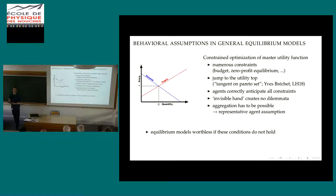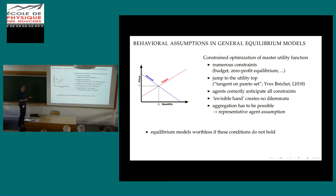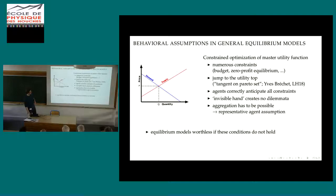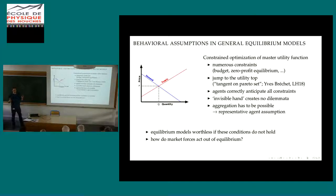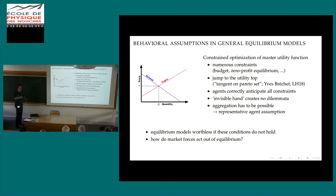Equilibrium models are rather worthless if these aggregation conditions do not hold. If you cannot aggregate, you cannot solve them because you have multiple optimization strategies that do not necessarily fit each other, and you don't get a unique equilibrium. So the question is: how do market forces and all this interaction work out of equilibrium?